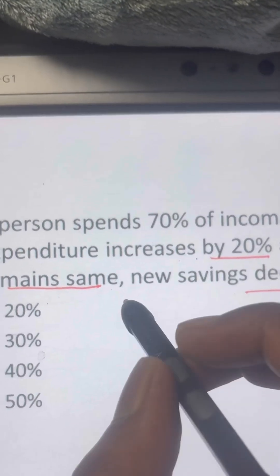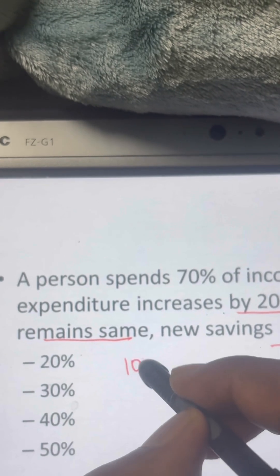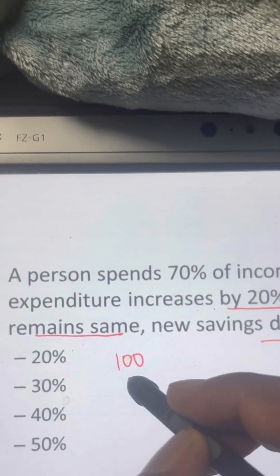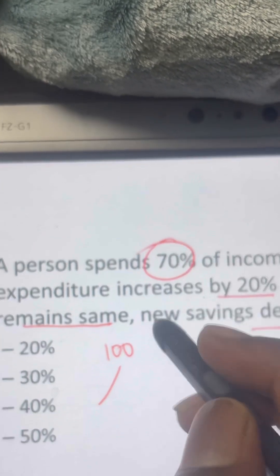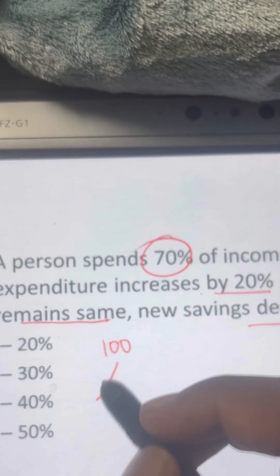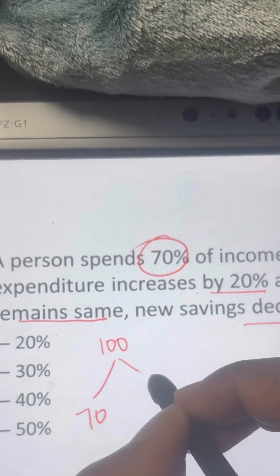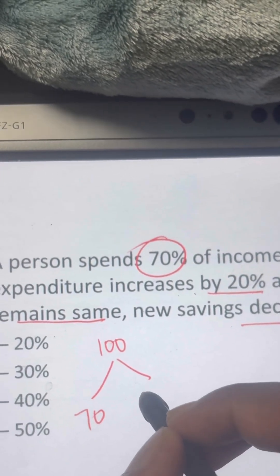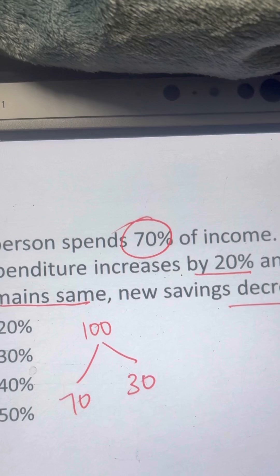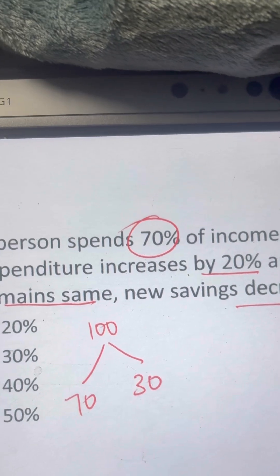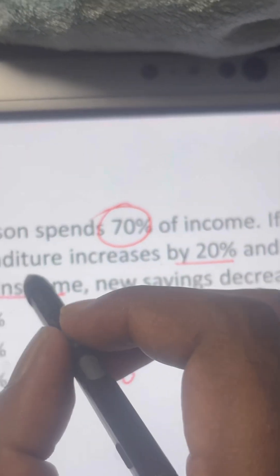Suppose income is 100 rupees. 70% of 100 means spending is 70 rupees, and savings would be 30 rupees.